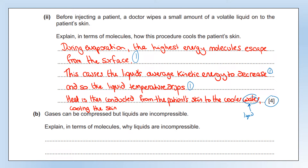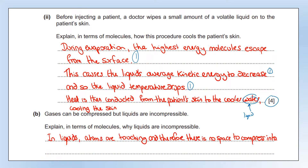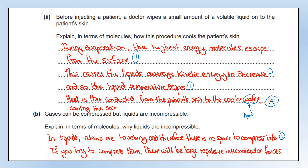Gases can be compressed but liquids are incompressible. Explain in terms of molecules why liquids are incompressible. First point: in liquids the atoms are touching, so there is no space to compress into — that's your first mark. Second mark: explaining what would happen if you did try to compress them — there would be a large repulsive intermolecular force, because the atoms are touching and cannot go inside each other; they are both surrounded by electrons.